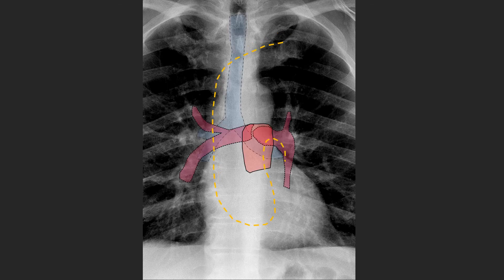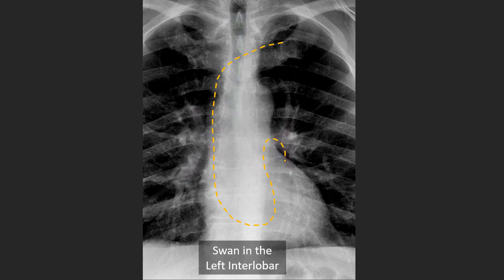Here's an example of a Swan-Ganz catheter within the left intralobar pulmonary artery. Notice how this catheter looks like it's looping on itself — this is not the case. It's just going up and over the left main stem airway and then down into the intralobar pulmonary artery. Again, we can see the left main stem airway in this area here.